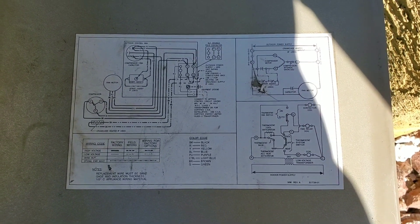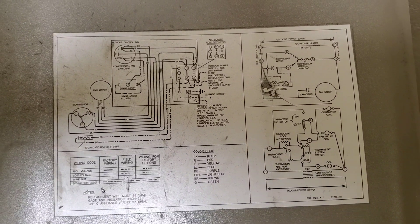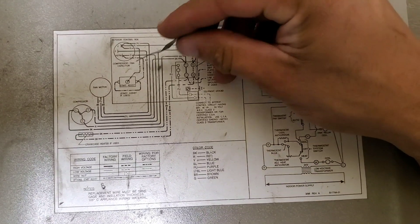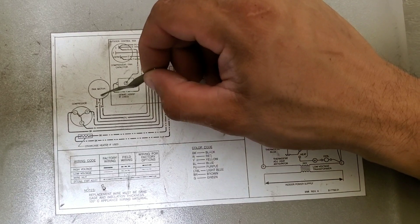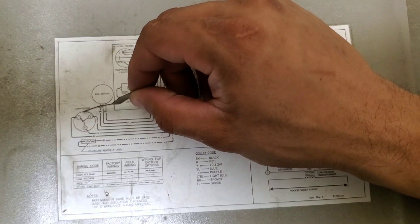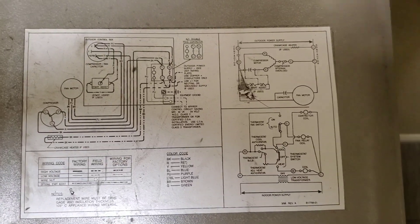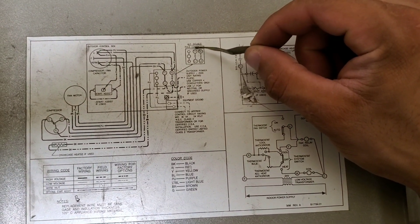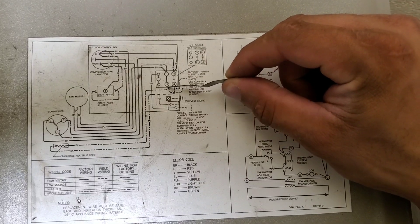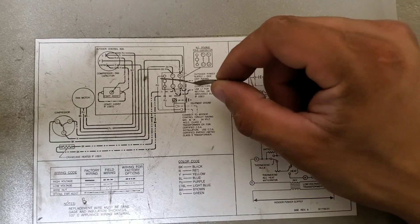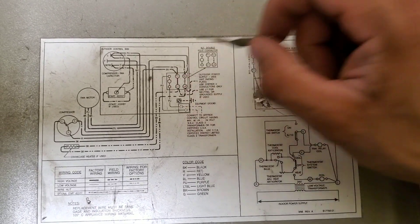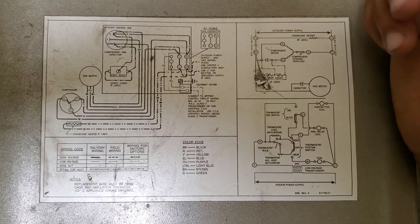Now if we look at the schematics, there are a few things we want to take note of. Right here we have the fan motor, this is your compressor, this is your contactor, and these are all the wires that feed in between.